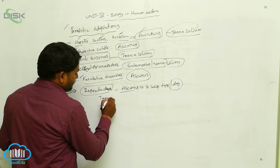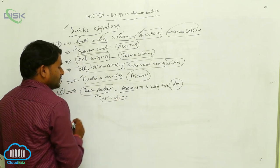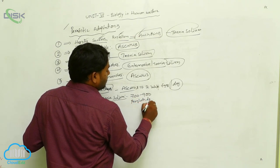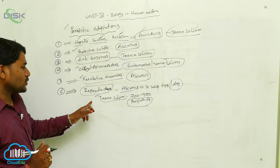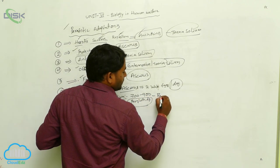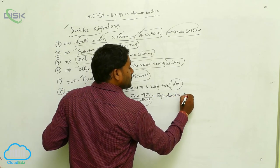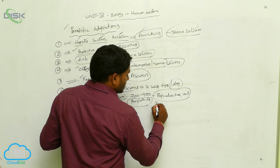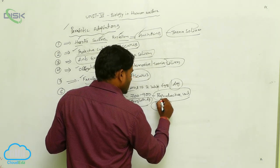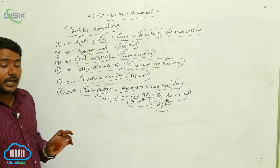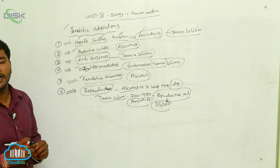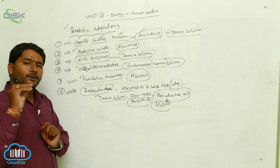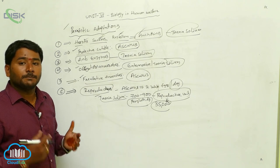If you take Taenia solium, its body is made up of 700 to 900 proglottids. Each proglottid is a reproductive unit, meaning a single segment can perform reproduction itself. Each proglottid produces 35,000 eggs. This enormous reproductive ability of the parasite helps it cause disease and infect more individuals, thus improving their population.